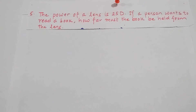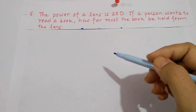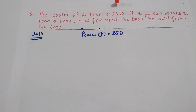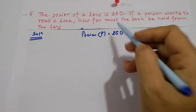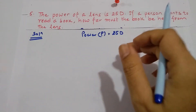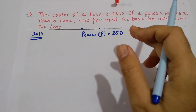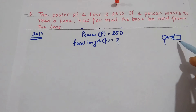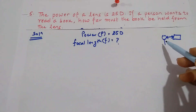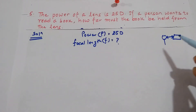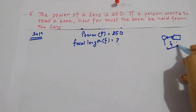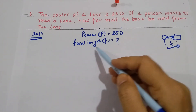Our next question is number 5 — this is quite interesting, that's why I took it first. Power P equals 2.5 D — it is 2.5 D, not 25 D. If a person wants to read a book, how far must the book be held from the lens? This question is quite tricky. If this is your book and this is your lens, the distance from the lens to the book should equal the focal length. So we need to find focal length F.